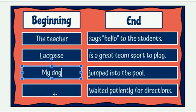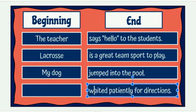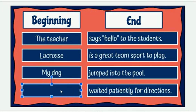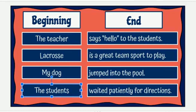Let's try the next one. It's also missing a beginning, but has an end: 'waited patiently for directions.' Since it's not a complete sentence, we shouldn't start with a capital letter — we'll give it a lowercase. Now for the beginning: who or what waited patiently for directions? What would your idea be? Go ahead and give it a try. I'm going to put 'the students,' because I like to teach and I like students that are learning. So now I have: 'The students waited patiently for directions.' Great job — I hope that helped you learn about complete sentences.